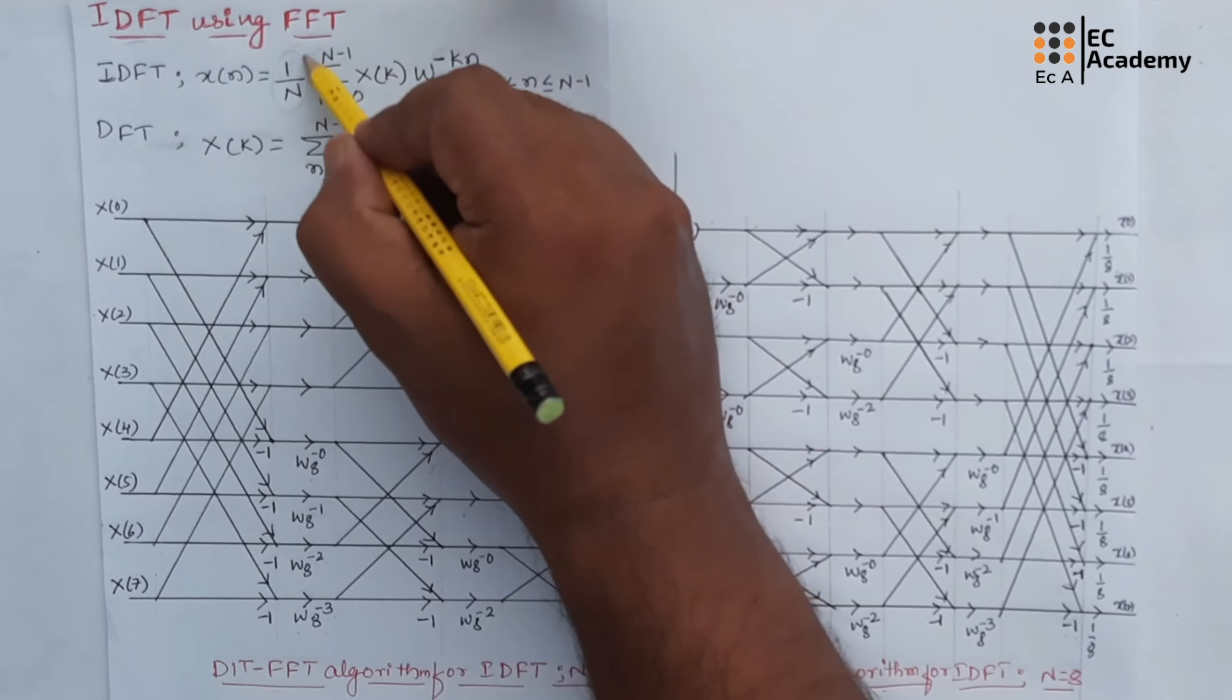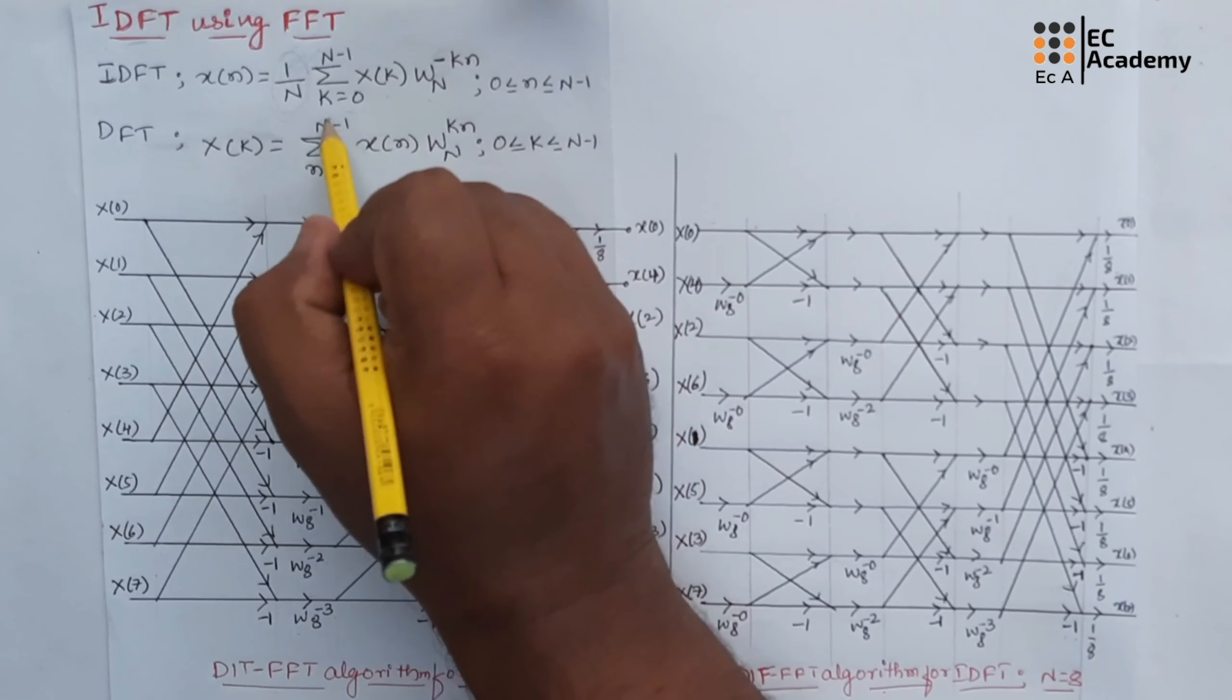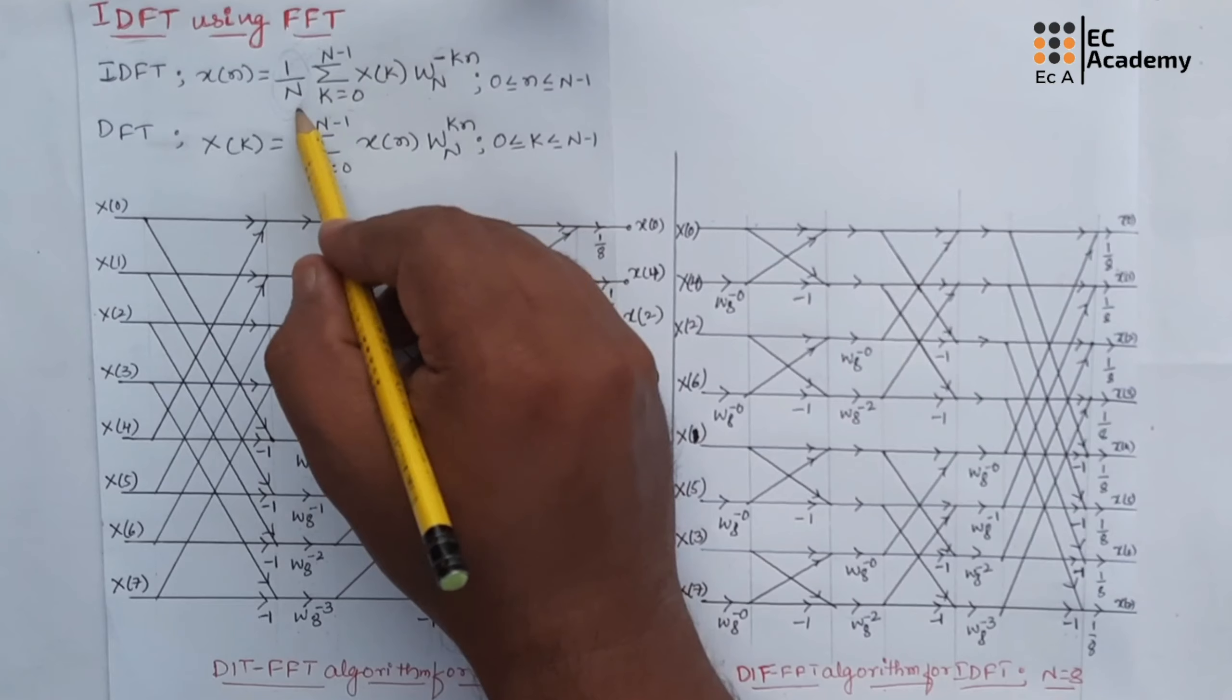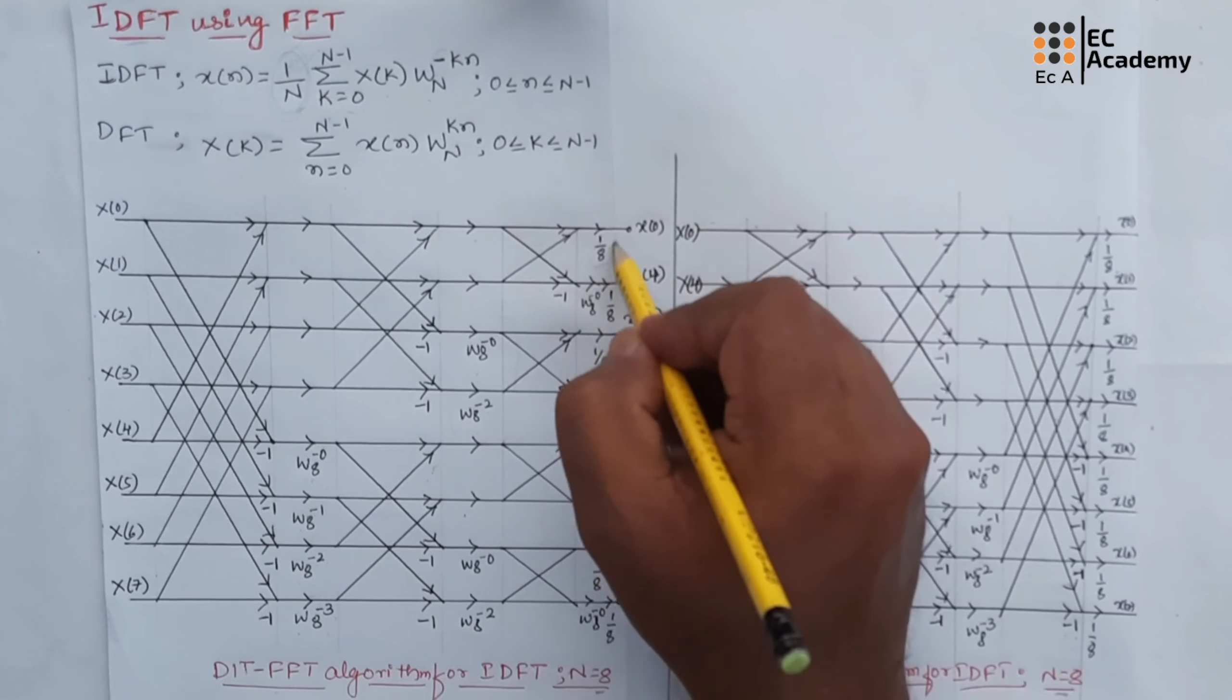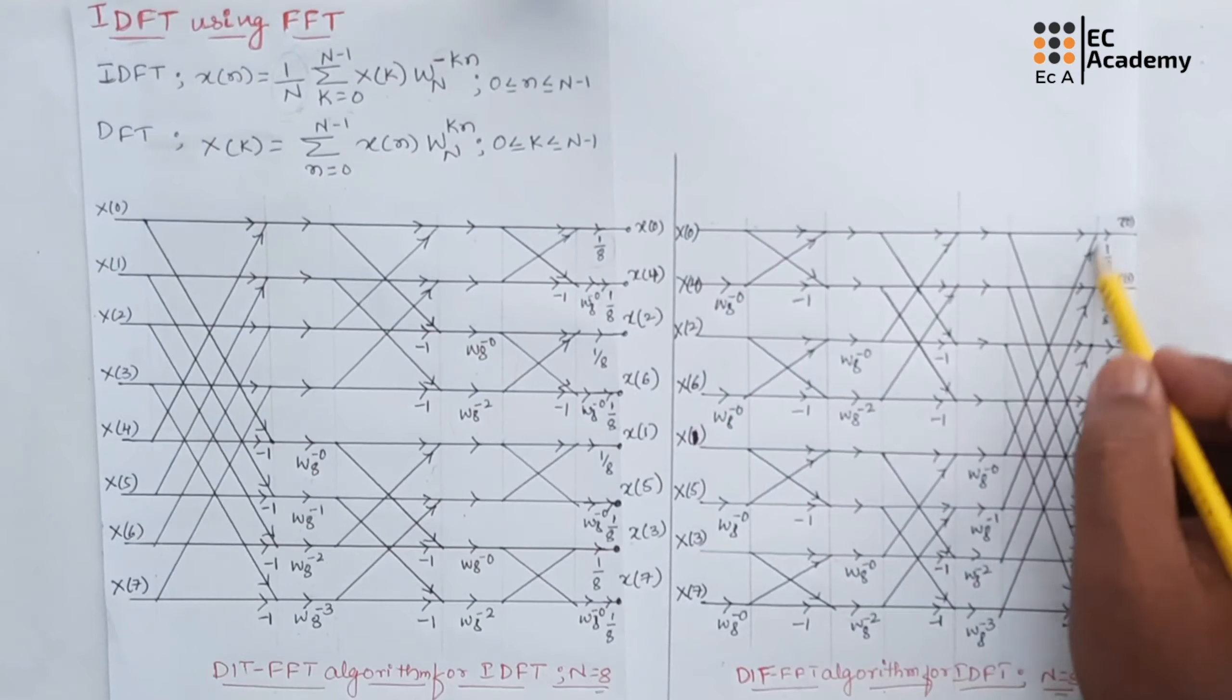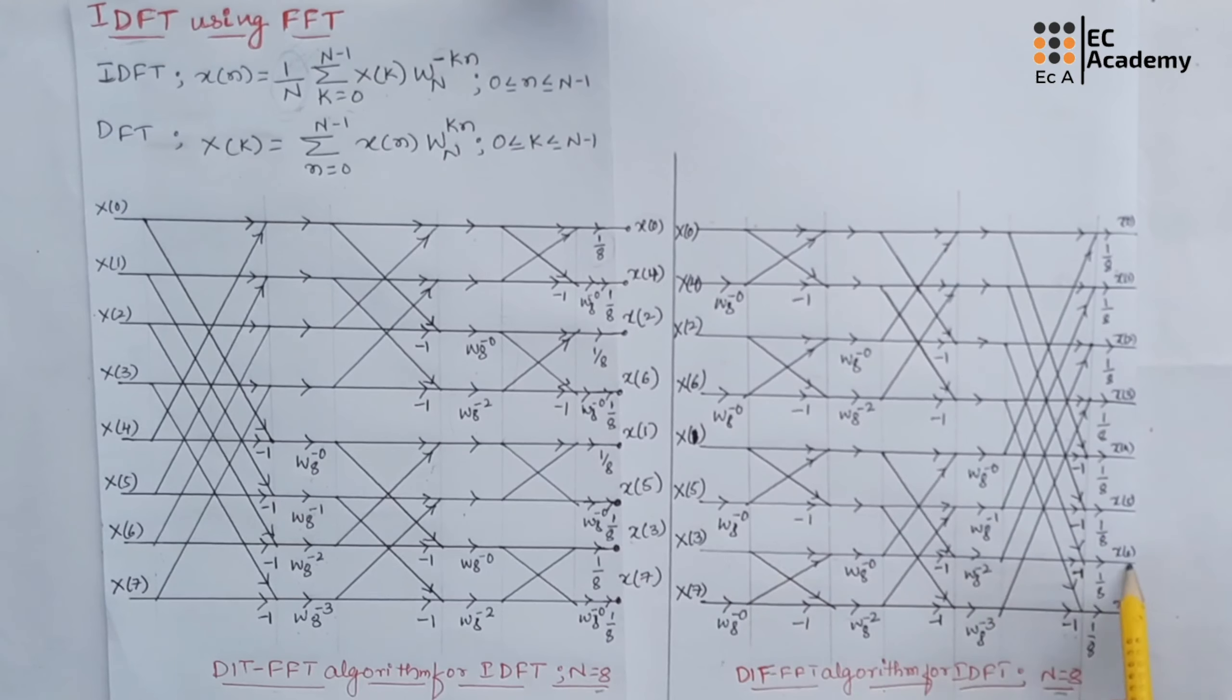If you see here, the IDFT is obtained by multiplying 1/N to the equation, so that is why what we need to do is we need to multiply the output by a factor 1/N. Since we are taking the example as N=8, the output will be multiplied with the factor 1/8. So you can see here for both type of flow graph we are multiplying with 1/8 at the output.